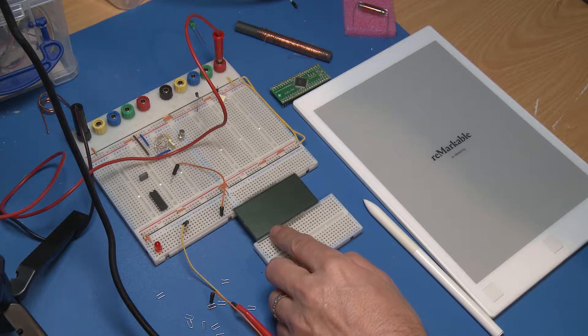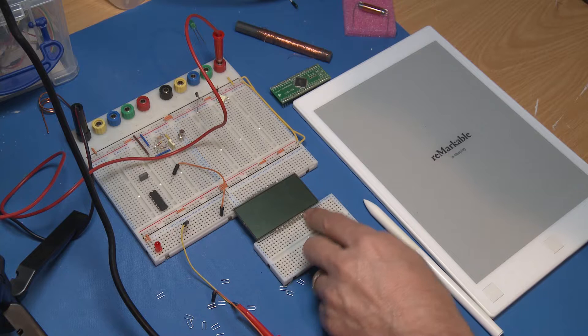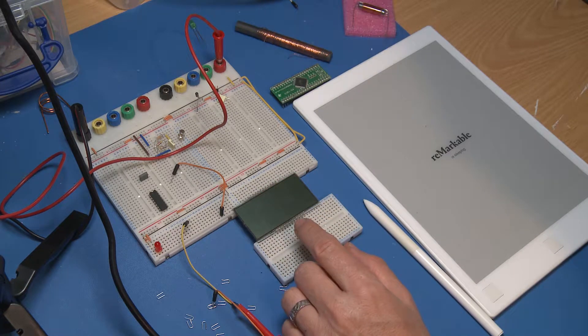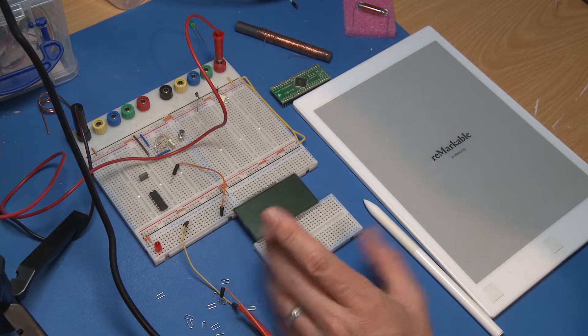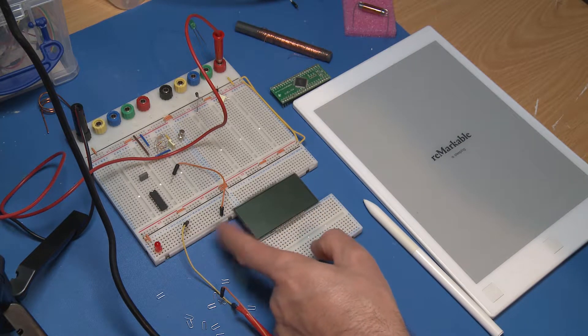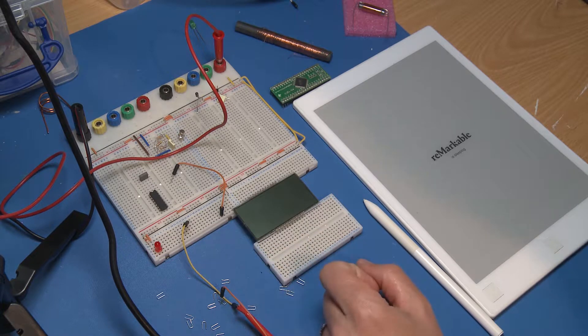I don't have the datasheet so I don't know for certain which way this will be, but I'm going to make an assumption that the little glass bump should be on the left hand side and that should be pin one.